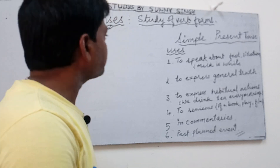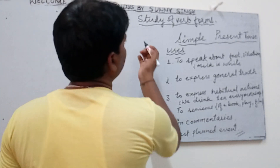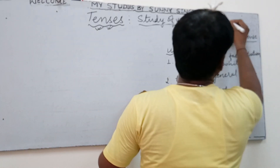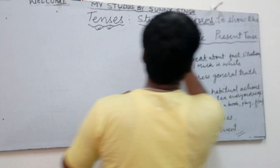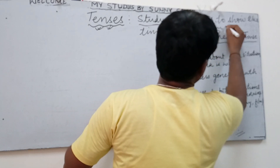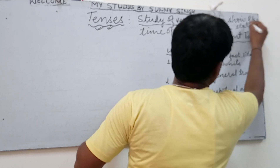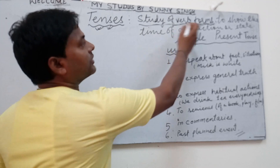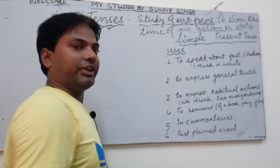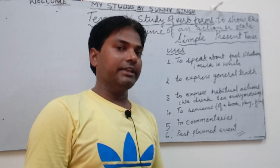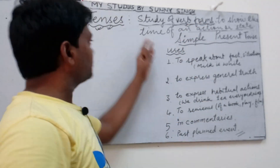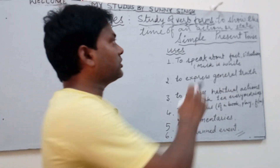To sort out your trouble, I am here with the topic. Let's talk about the definition of tenses. The definition says that tense is the study of verb forms to show the time of an action or state. The time of an action or state means: what work is performed at what time. If you understand this with the help of verb forms, that is what is called tenses.